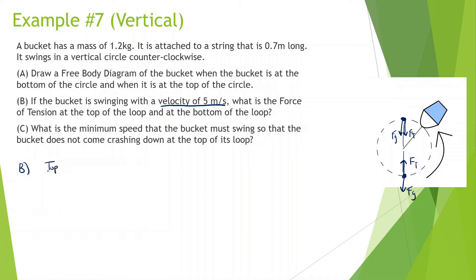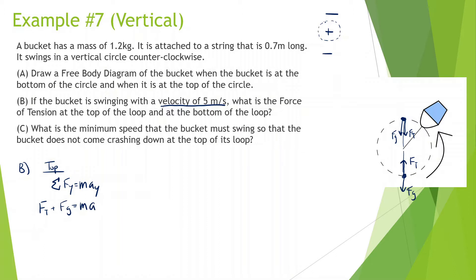First, we're going to do the top. At the top, we're going to look at all the forces. It's going to be sum of all forces in the y equals mass times acceleration in the y. On the chapter of uniform circular motion, I like to label all the forces that are going towards the circle as positive, and any force going away from the circle as negative. So we have force of tension and force of gravity going towards the circle, so we're going to label both of those positive. This is going to be equal to mass times acceleration, which is centripetal acceleration.